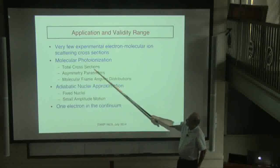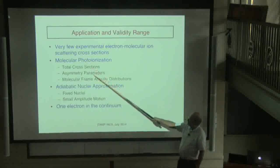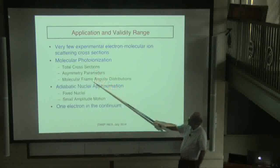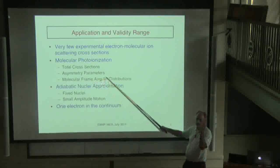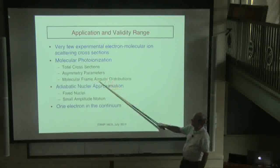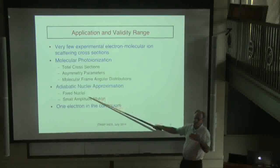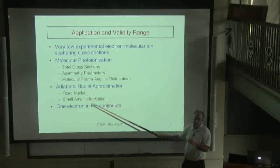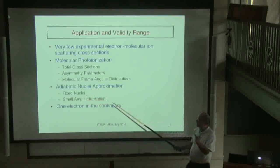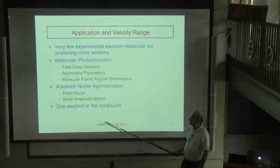What we're looking at in terms of molecular photo-ionization are total cross-sections, orientation-average asymmetry parameters, and with some recent experiments, some molecular frame angular distributions — in the frame of the molecule where the photo-ionization gets sent. We do everything within an adiabatic nuclei approximation, so you can do the calculation at fixed nuclei, and then I'll have a few results looking at some small amplitude motion where you're just averaging over the vibrational states.